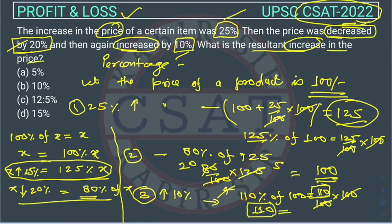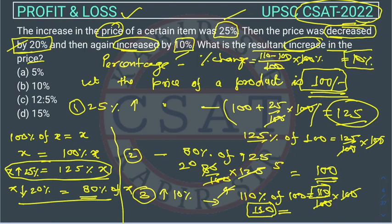So this is the final price. And what was the initial price we assume? 100. So what is the net change? If you remember, I told you, percentage change is how much? Final price minus initial price upon initial price into 100. This comes in percentage. So this 100 will cut this one. So it will be 10%. So 10% is our answer. Means option B is our answer.